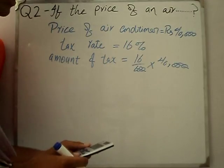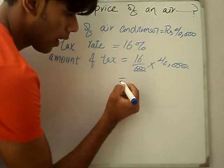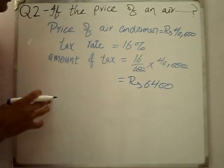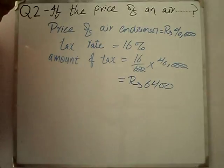6,000 and 400 equals Rs. 6,400. The amount of tax is Rs. 6,400.